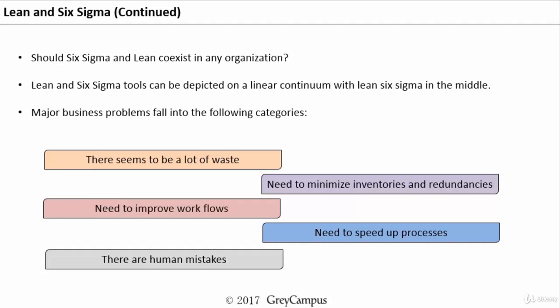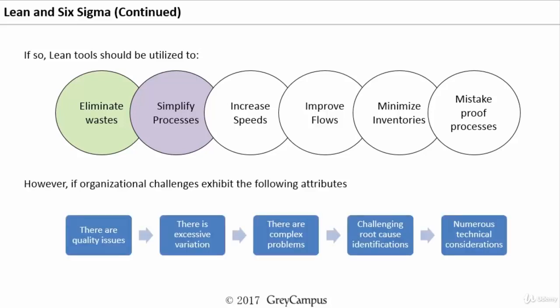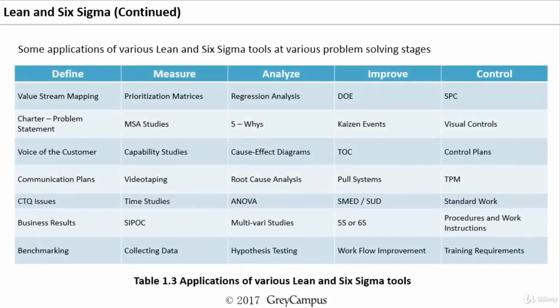Whenever there seems to be a lot of waste, whenever we need to improve workflows, whenever there are human mistakes, whenever we need to minimize inventories — in those cases we go for Lean. Lean helps us eliminate waste, simplify processes, increase speed, improve workflows, minimize inventories, and mistake-proof the processes. But if the organization has more complex challenges like excessive variation, complex technical problems, or challenging root cause identification, then it is better to go for Six Sigma.